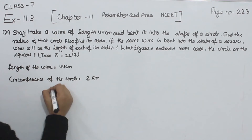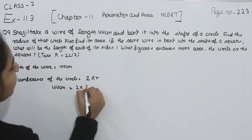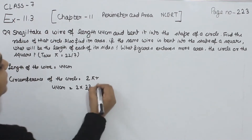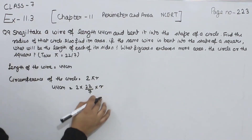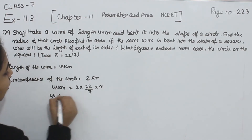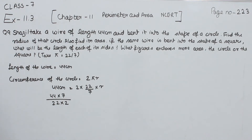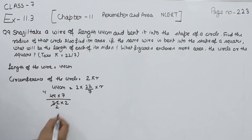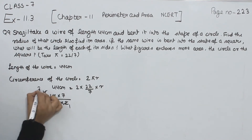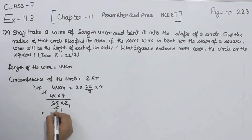Now we are knowing the circumference as 44 cm. So: 2 multiplied by pi (22/7) multiplied by r equals 44. Radius we are not knowing, we have to find it. So we are going to transpose: r equals 44 multiplied by 7 divided by 22 multiplied by 2. Simplifying, we get 7 cm as the radius.